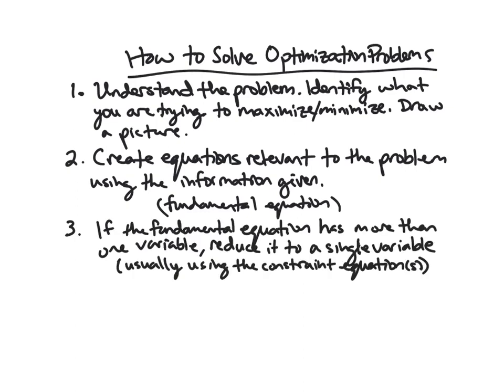In the case that the fundamental equation has more than one variable, we'll actually use these constraint equations to reduce it to a single variable. This is single variable calculus. If we want to find a max or min, we would like to have an equation with only one variable.